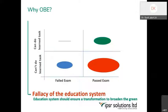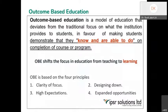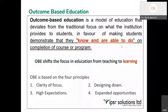That is the major focus of outcome-based education. Outcome-based education is a model of education that deviates from the traditional focus on what the institution provides to students, in favor of making the students demonstrate that they know — that is the academic domain — and at the second axis, what they are capable of doing. The traditional system is more input-based; outcome-based education focuses on what is output-based — what the students are capable of knowing and doing.